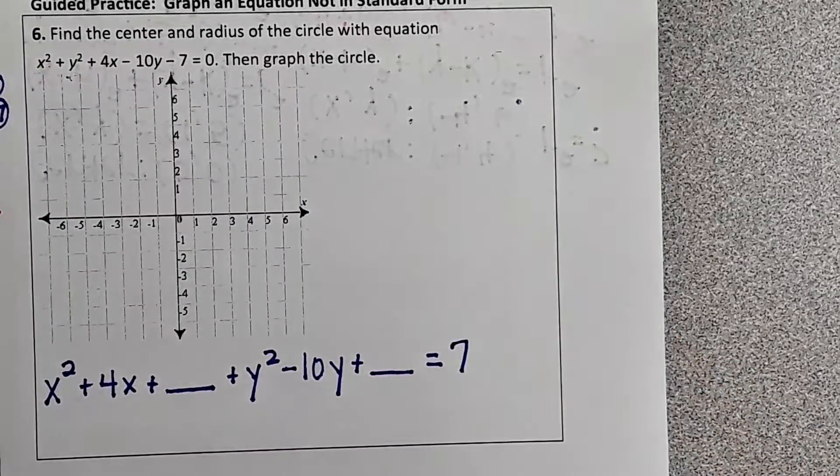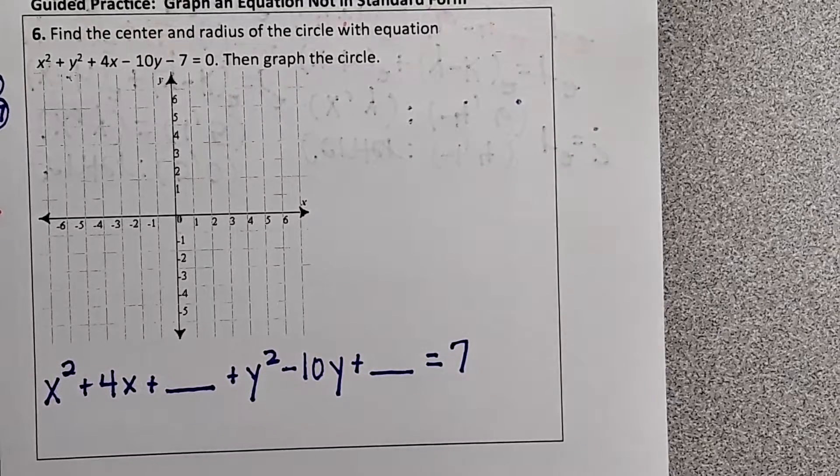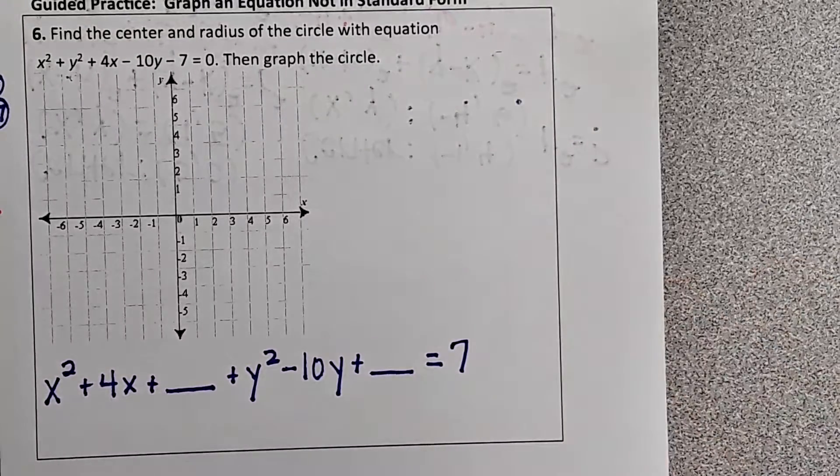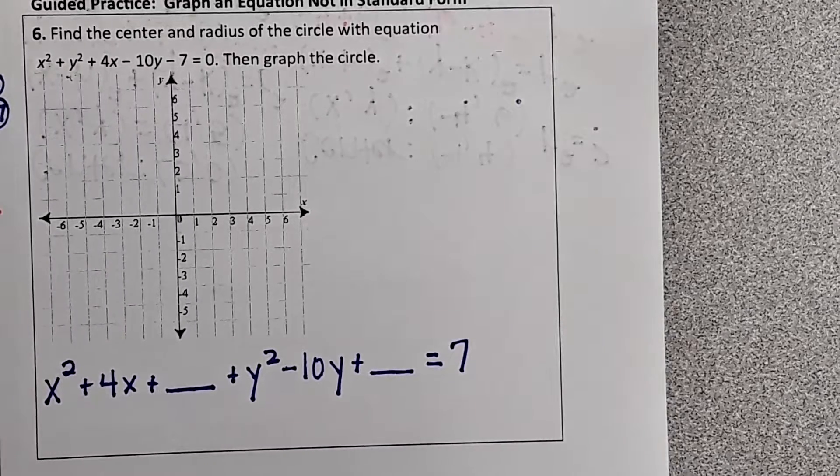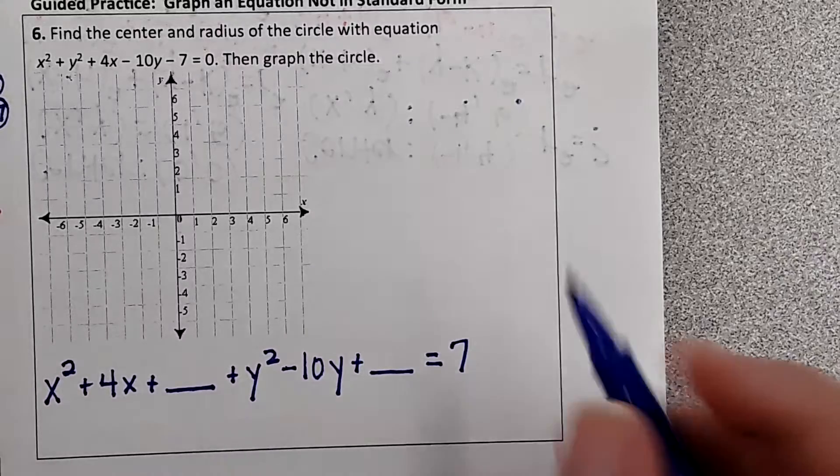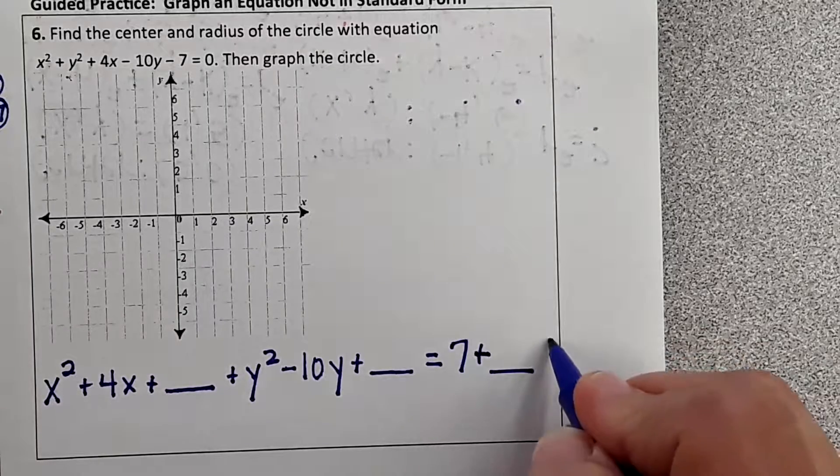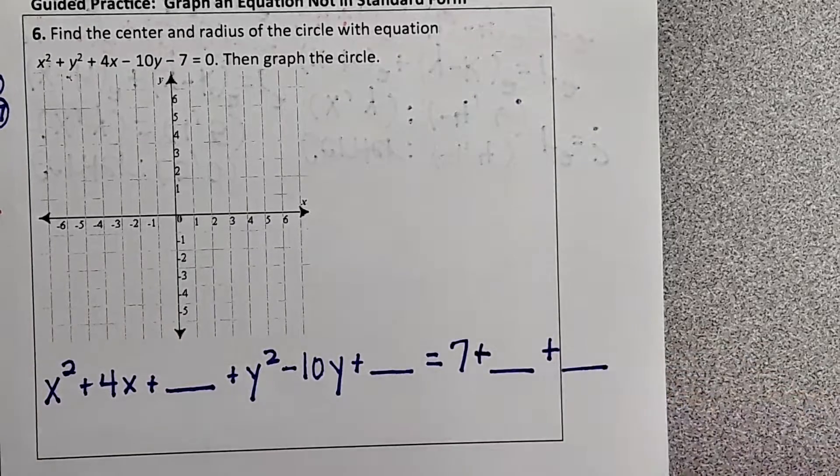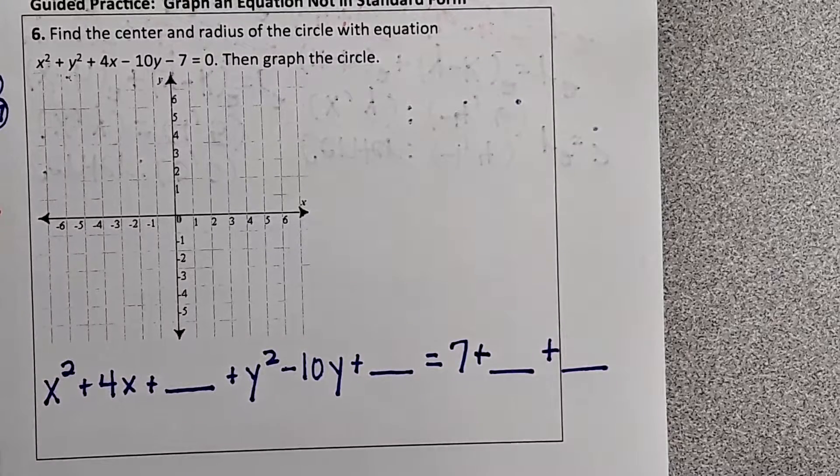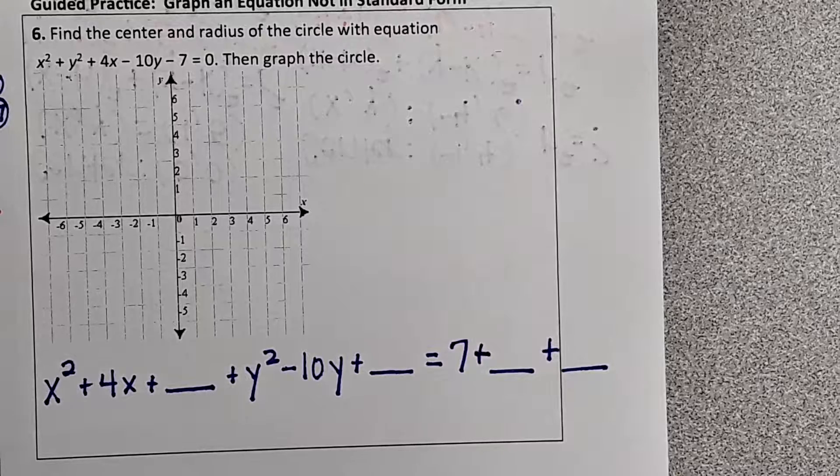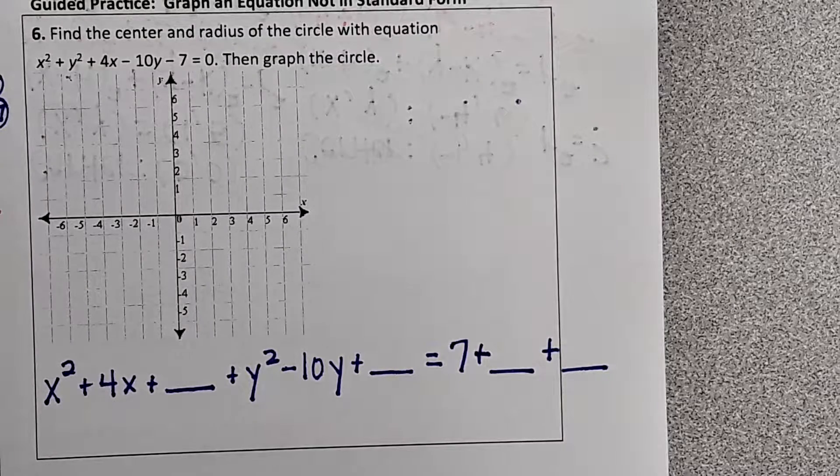Now if you notice this looks a lot like completing a square. So what we're going to do is complete the square. Now see I have two blanks? That means over here I have to have two blanks. I wrote plus blank plus blank, but in parabolas I wrote minus. That's because everything stayed on one side. We actually moved everything to the other side.